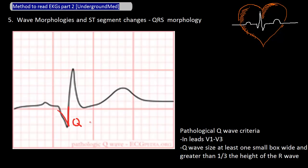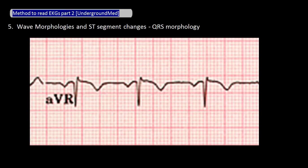Any Q wave in leads V1 to V3 should be considered pathologic. In all other leads, consider a Q wave pathologic only if it's at least one box wide and greater than one-third the height of the R wave. If you see what you think is a pathological Q wave, check in the other leads in the same coronary artery distribution that we discussed in a previous video. If a Q wave appears in more than one lead in the same arterial distribution, there's a good chance that you're seeing real pathological Q waves.